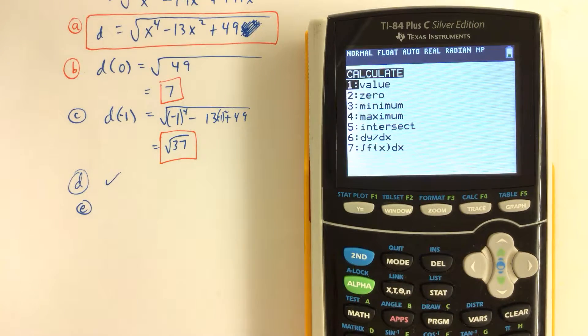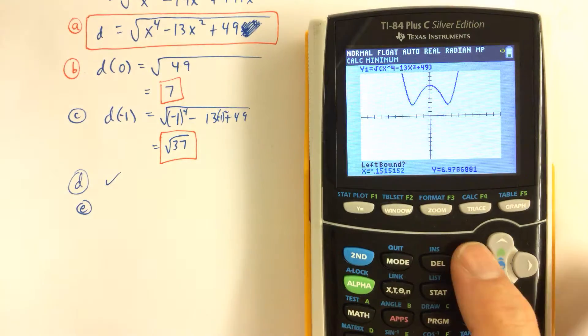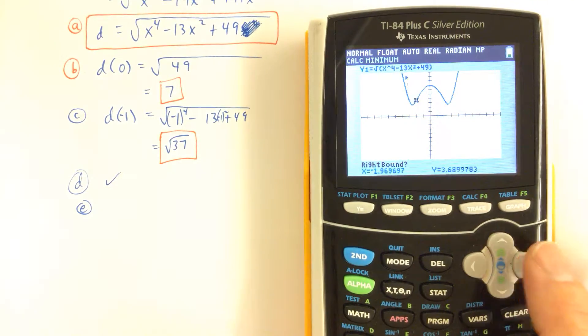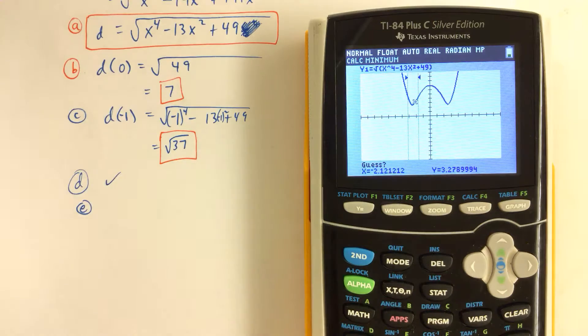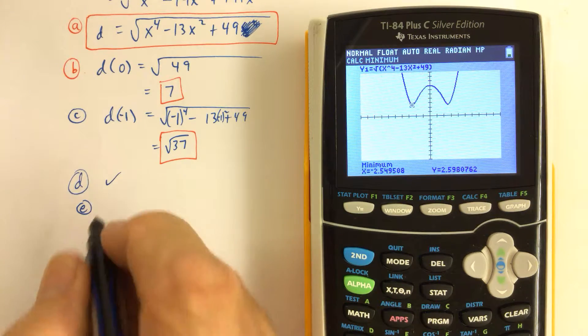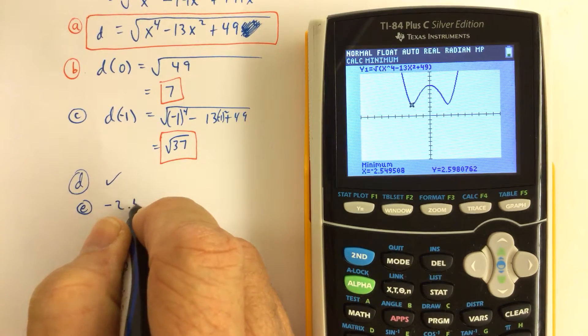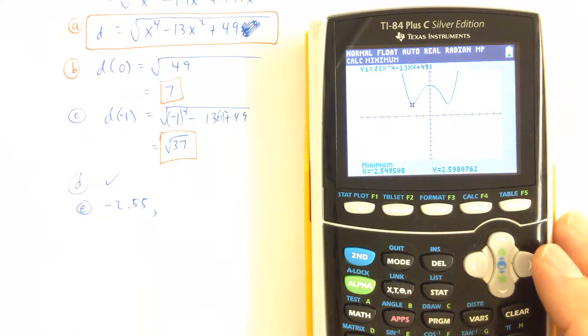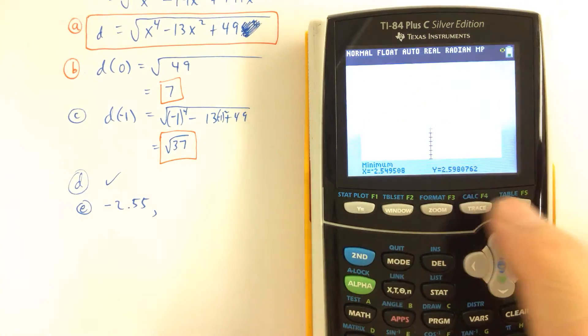So if we do second calculate minimum, we move the cursor to the left of that low point in the second quadrant, mark it with Enter, and then move the cursor to the right side of that low point, mark it with Enter, and then guess, move the cursor back in between the two. And we see that when X is equal to negative 2.55, negative 2.55 would be one value. And most likely it's going to be 2.55 on the right-hand side, but just to confirm...